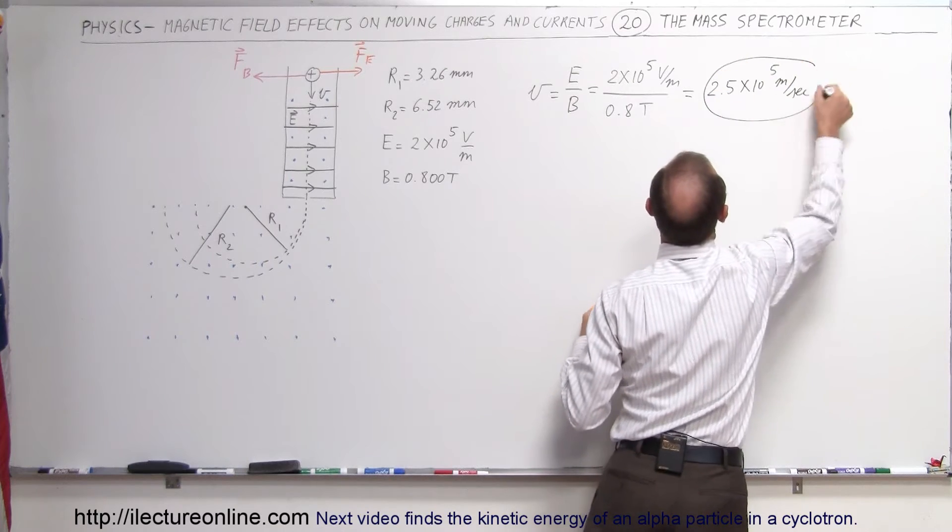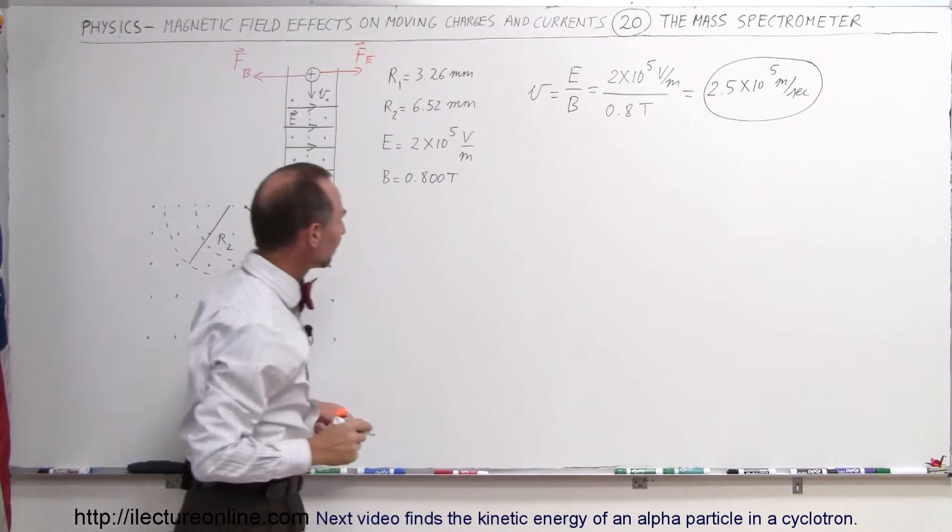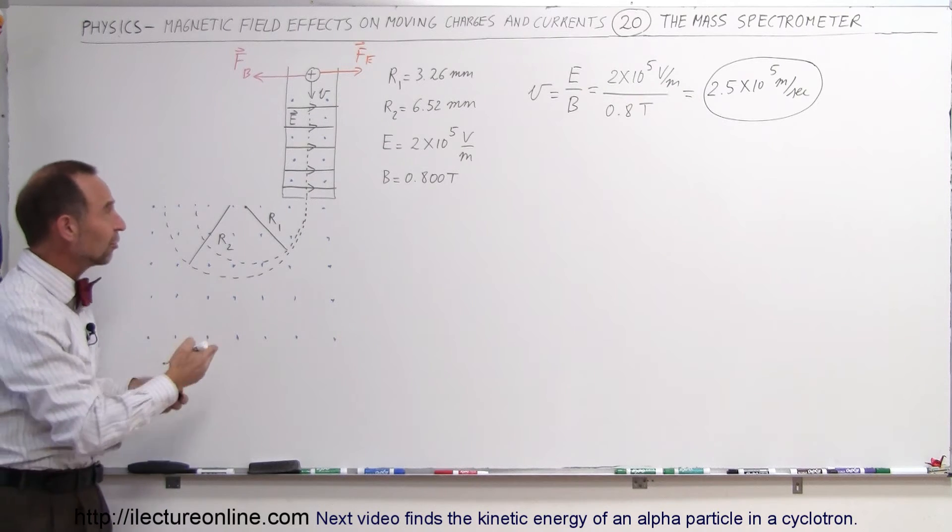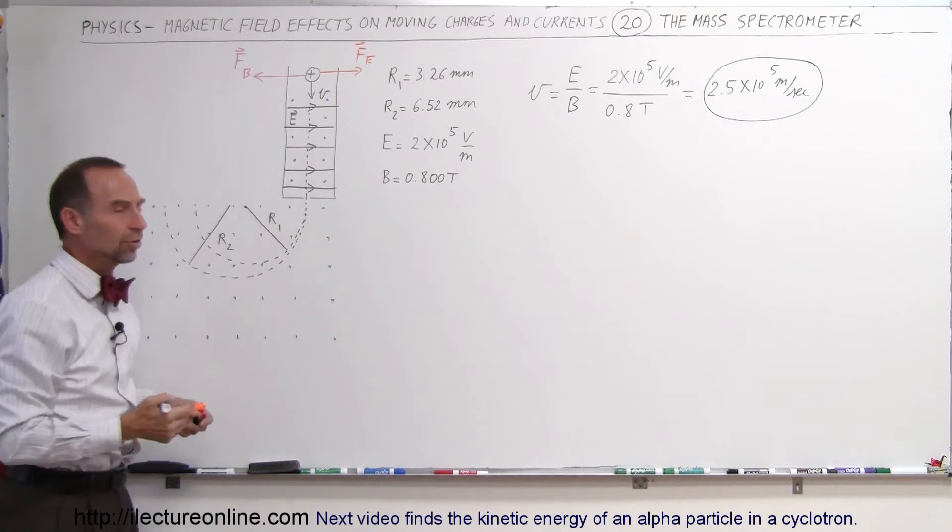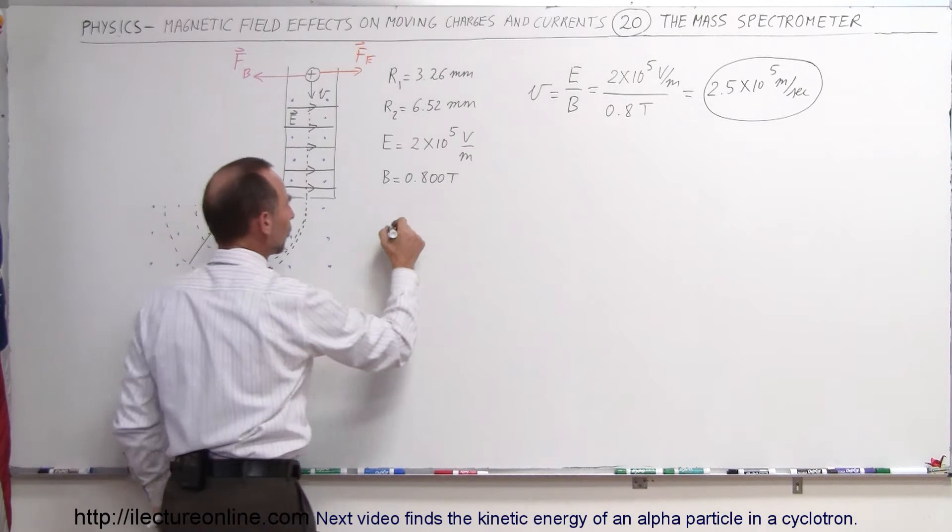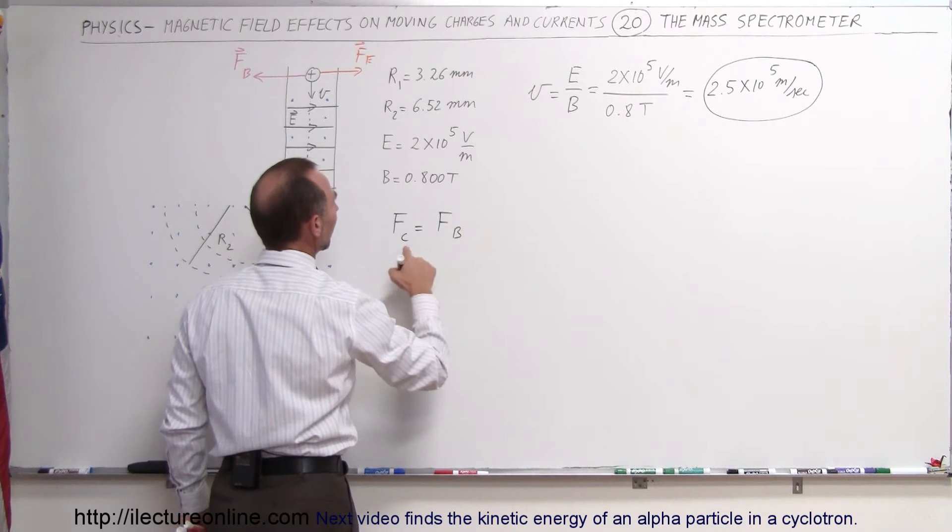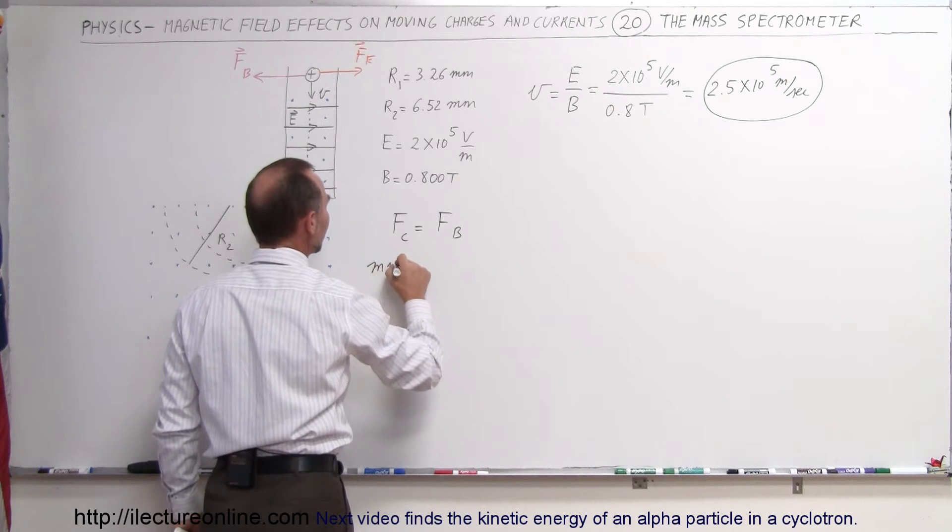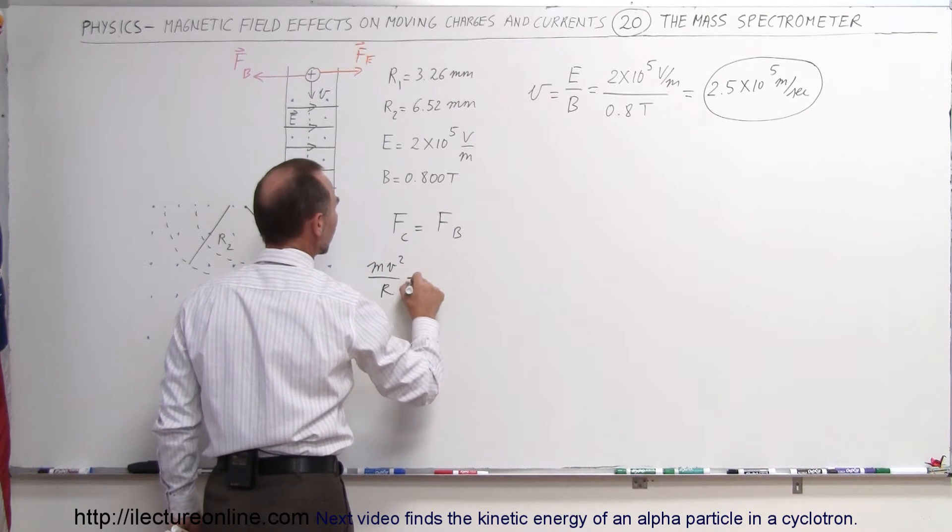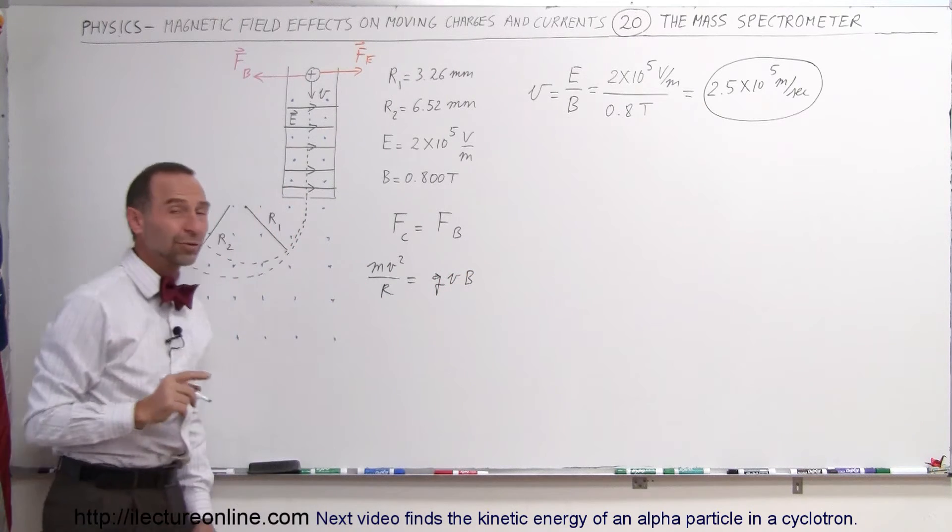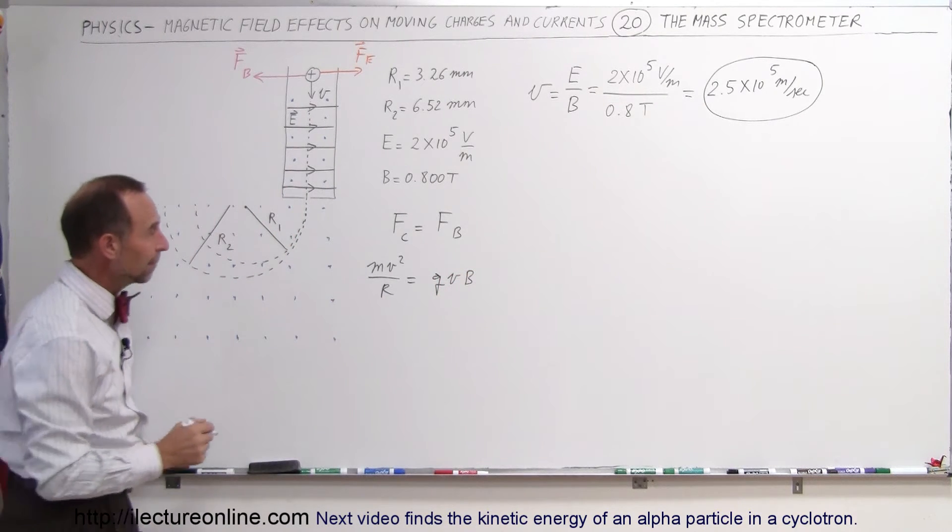So that would be the velocity of the particles coming out of the velocity selector. Now they enter this region here where the electric field is no longer existent. So only the magnetic field acts upon the particles. And we know that the force, the centripetal force, must be caused by the magnetic field. The centripetal force is mv squared over r. The force caused by the magnetic field is qvb.